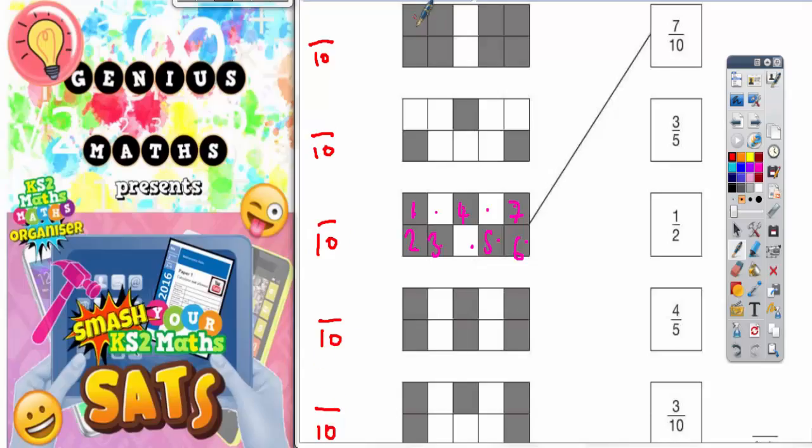Well in the top shape we've got 1, 2, 3, 4, 5, 6, 7, 8. So that was 8 out of 10.